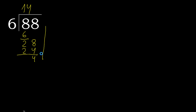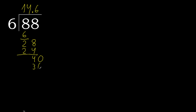There is no next digit, so we complete with a decimal point and add 0. Now we have 40. 6 multiplied by 6 is 36, which is not greater. 40 minus 36 is 4. Complete with the decimal point.